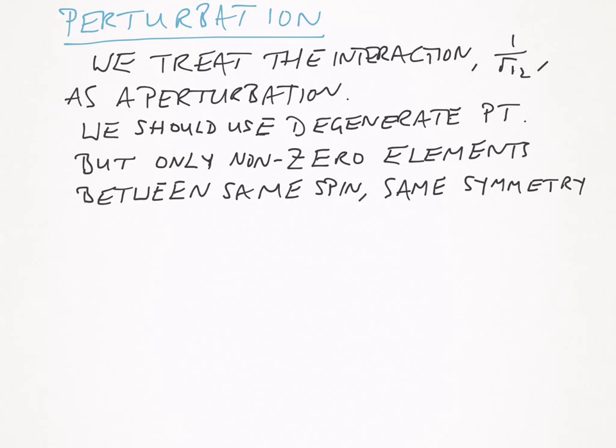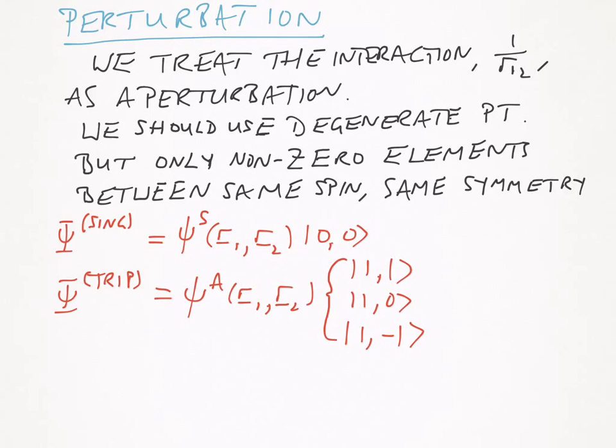Now, in this situation, we should really be using degenerate perturbation theory, because the energy levels of the n equals 2 shell are degenerate. However, we can show quite easily that the only non-zero matrix elements are between wave functions with the same spin and the same symmetry. So we don't actually need to do that. So we write the following. We say that the singlet wave function uses the symmetric spatial wave function, that's psi S of R1,2, multiplied by the singlet.